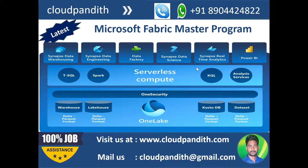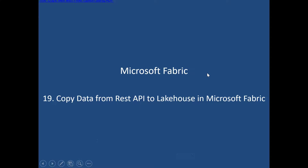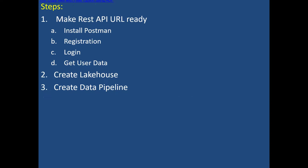Welcome to Cloud Pundit in this Microsoft Fabric master program. In today's session we will talk about how to copy data from a REST API to the lakehouse in Microsoft Fabric. There are a few steps we need to follow to achieve this. Step one: we need to make the source available — our source is a REST API, so we need to make our REST API URL ready.